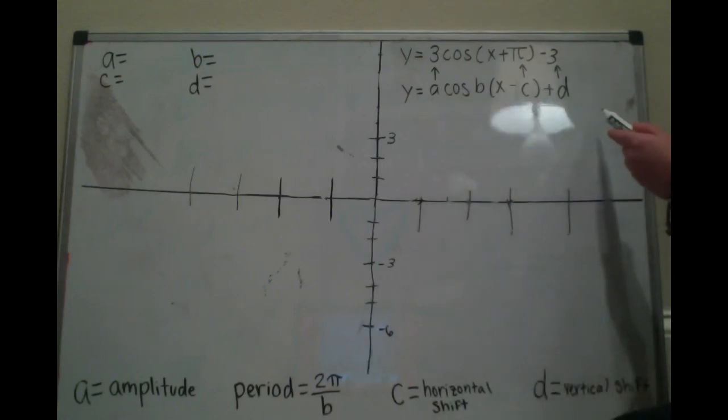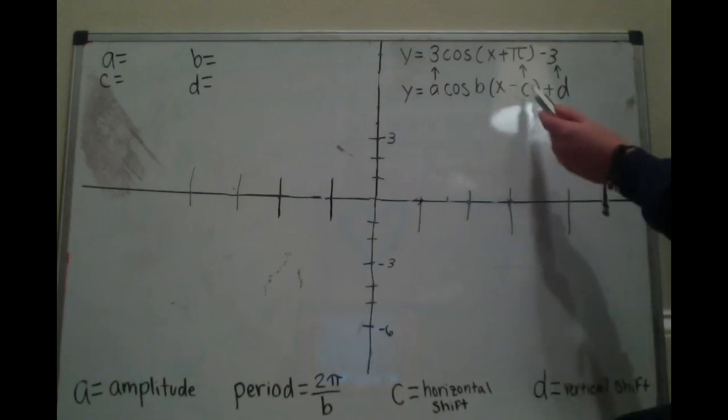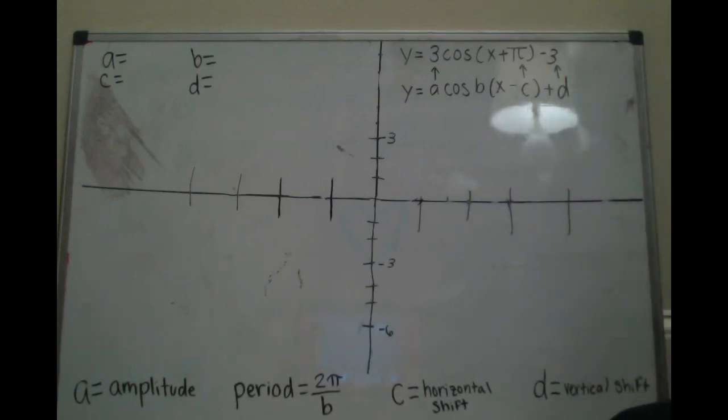We have to rely on our general formula for cosine, y equals a cos b(x minus c) plus d. But I bet you're wondering, what do all these variables mean? Well, essentially we have four different possible variables in this equation. However, in every equation you're not necessarily going to use all four variables a, b, c, and d.